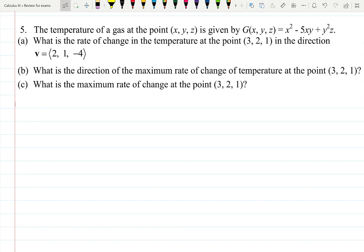Let's find the temperature of the gas at the point (x, y, z) if the function is given as x² - 5xy + y²z. They first ask to find the rate of change of the temperature, that means derivatives. What kind of derivatives? All partial derivatives. For part (a), let's find basically the gradient G(x, y, z).